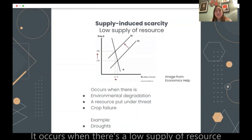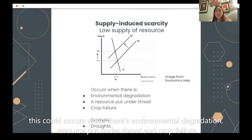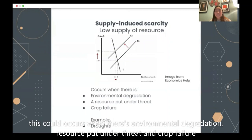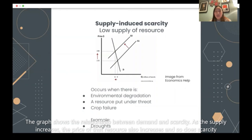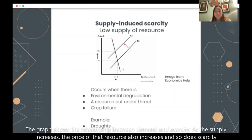Next is supply-induced scarcity. It occurs when there is a low supply of a resource. This can occur when there is environmental degradation such as soil erosion, resources put under threat, or crop failure. This graph shows the relationship between demand and scarcity. As the supply increases, the price for that resource increases and so does the scarcity.